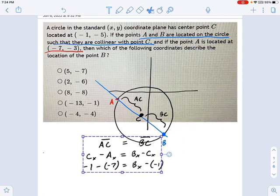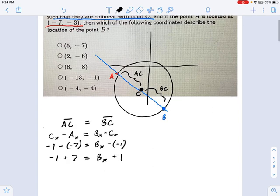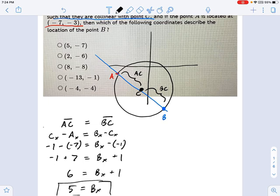We already talked here, and we can solve this thing. I'm just going to make myself a little more room. If we solve this equation, negative 1 minus negative 7, well, that's negative 1 plus 7, and Bx plus 1. So this becomes 6 equals Bx plus 1, and that means minus 1 from each side, Bx is 5. In other words, the x-coordinate of point B is 5.